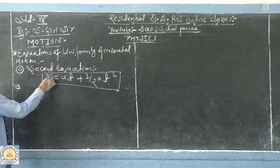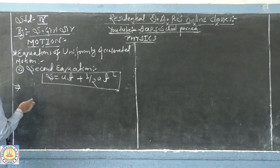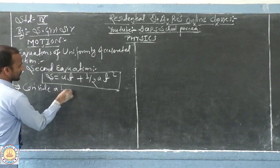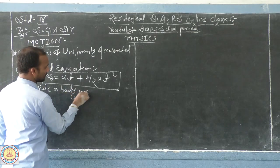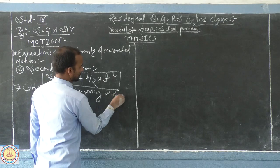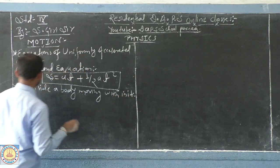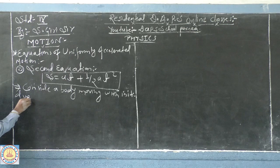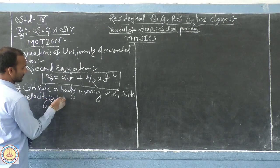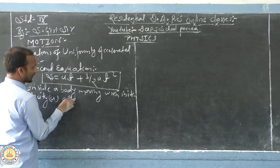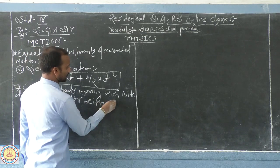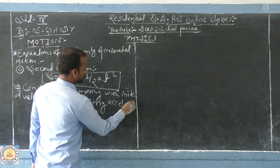Here, S stands for the distance covered. For this, consider a body moving with initial velocity u after being accelerated.